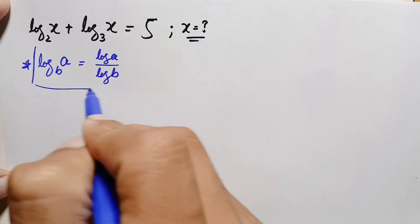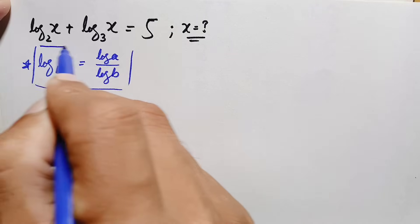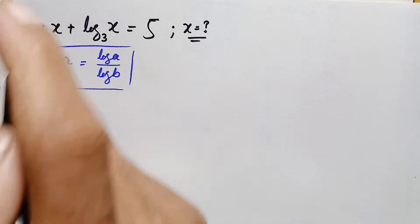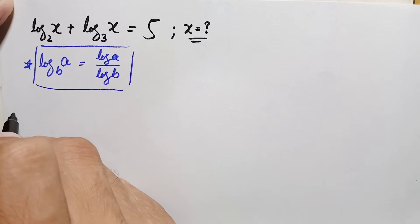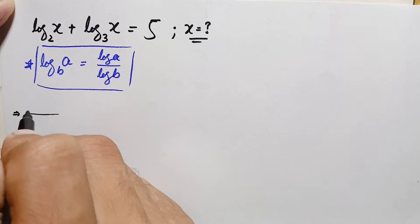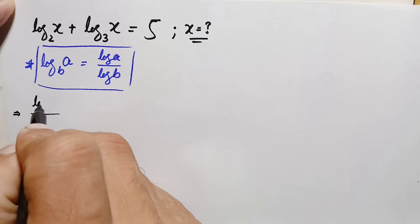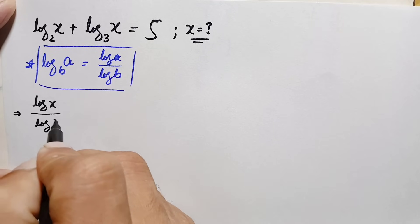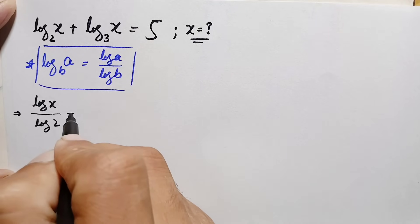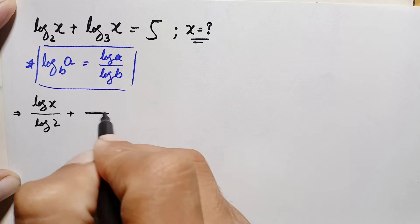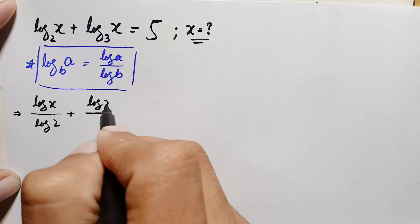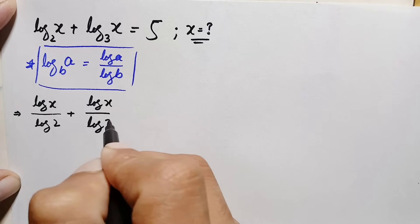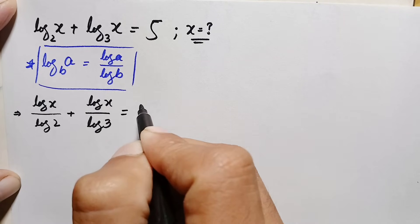Using this change of base logarithm identity, the left hand side will become: log of x divided by log of 2, plus log of x divided by log of 3, is equal to 5.